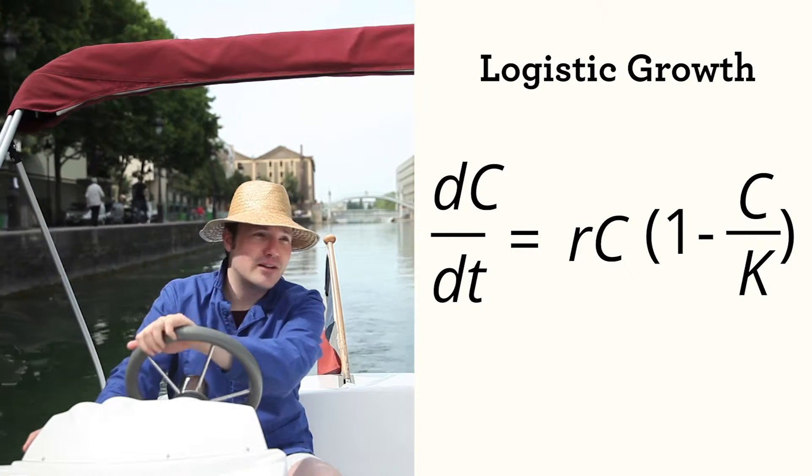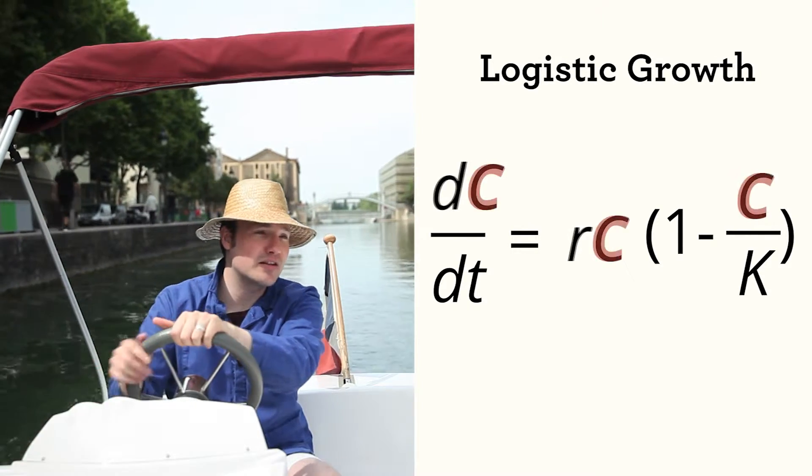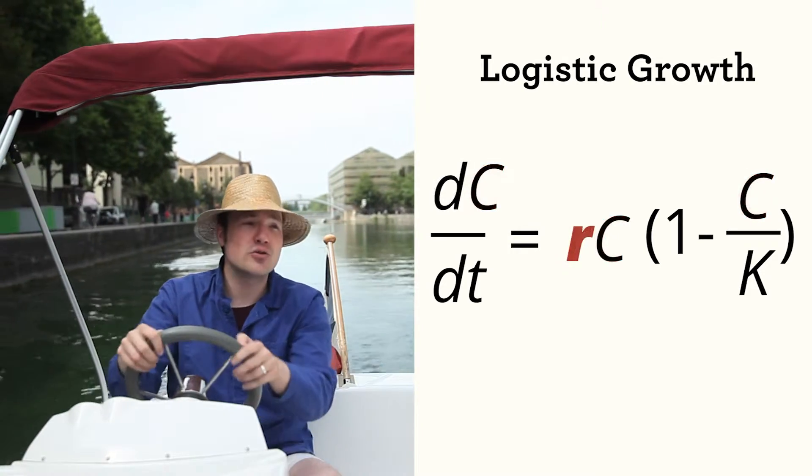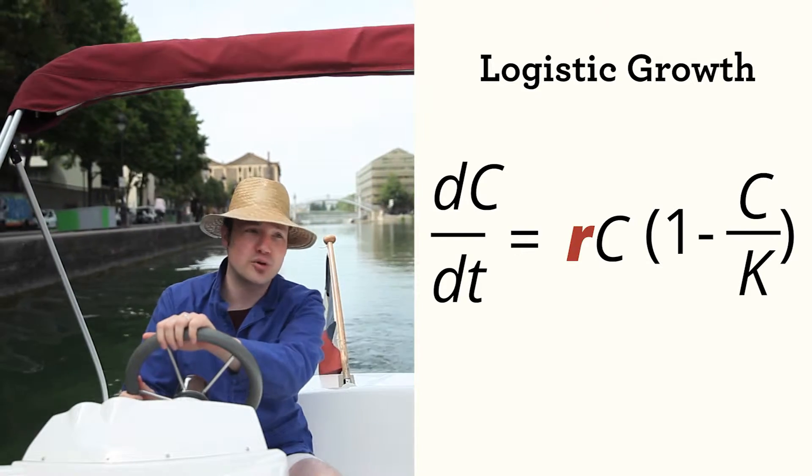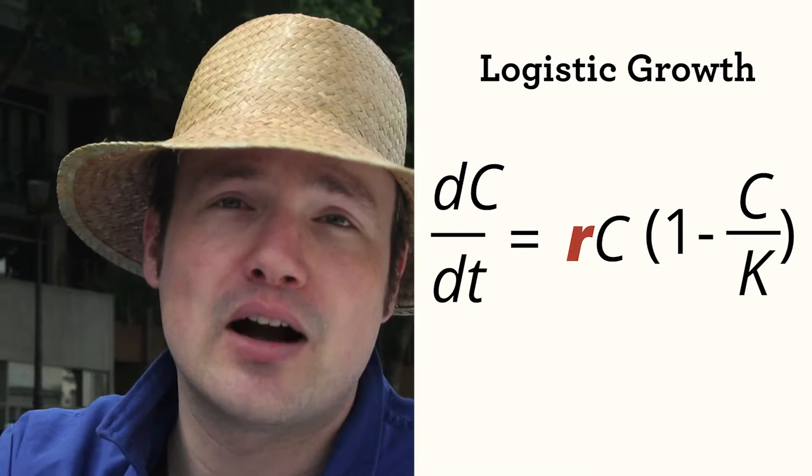Let's walk through and look at the differences. We still have C, representing the number of cells. We still have R, the specific growth rate. You could imagine, for example, one division per hour. The physical unit of R is per hour, or hours to the minus one.